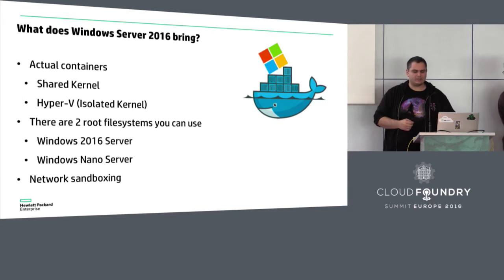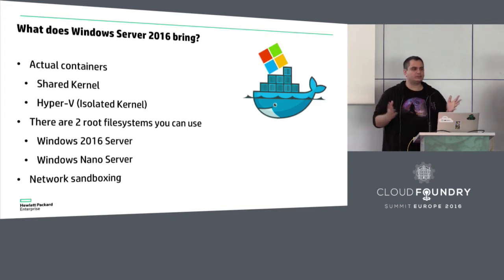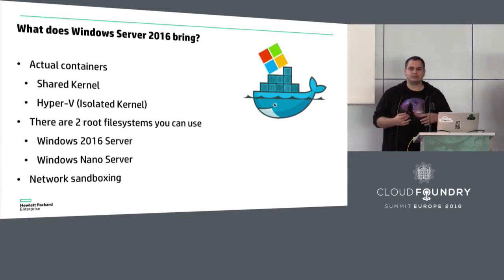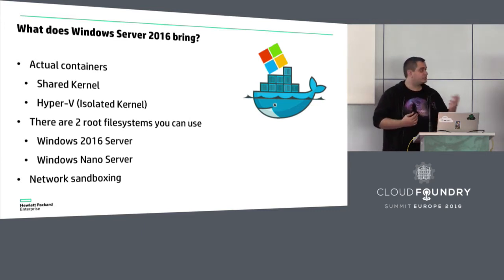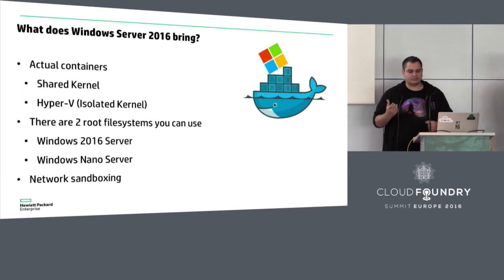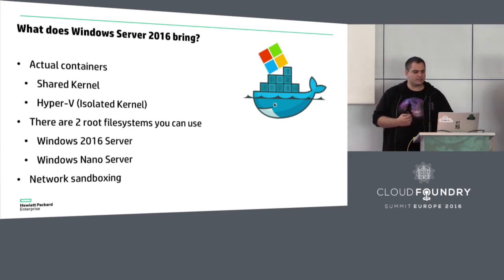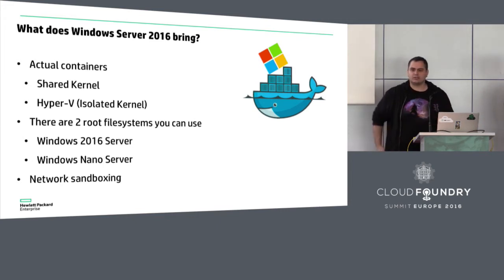Having actual containers means we need something like chroot. Microsoft has made available two root file systems so far: a full Windows Server 2016 and the much smaller new Nano Server. These two images will give users more choice, and the Nano Server will probably help a lot with application density. Finally, you get network isolation. Using the new NetDriver capabilities on Windows 2016, each container gets its own IP address from an internal private subnet — equivalent to network namespaces on Linux. These are the things that will make Windows support for Cloud Foundry truly a first-class citizen.